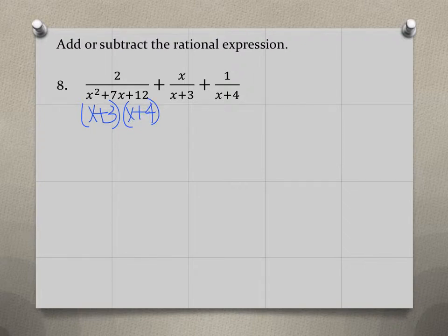So now we can see better what we have and what we need to get. The first denominator has a factor of x plus 3 and x plus 4. The second denominator just has x plus 3 and the third one just has x plus 4. So we want to use a least common denominator of x plus 3 times x plus 4.